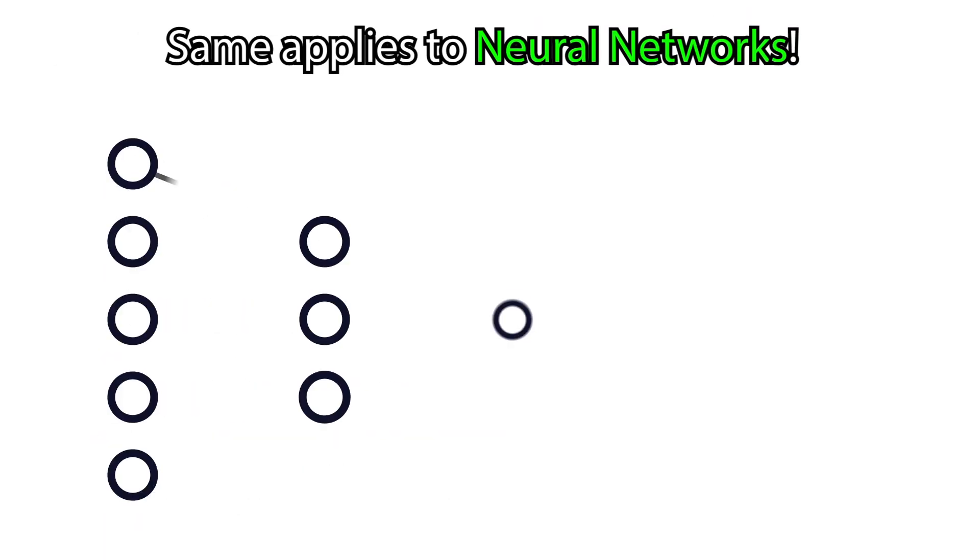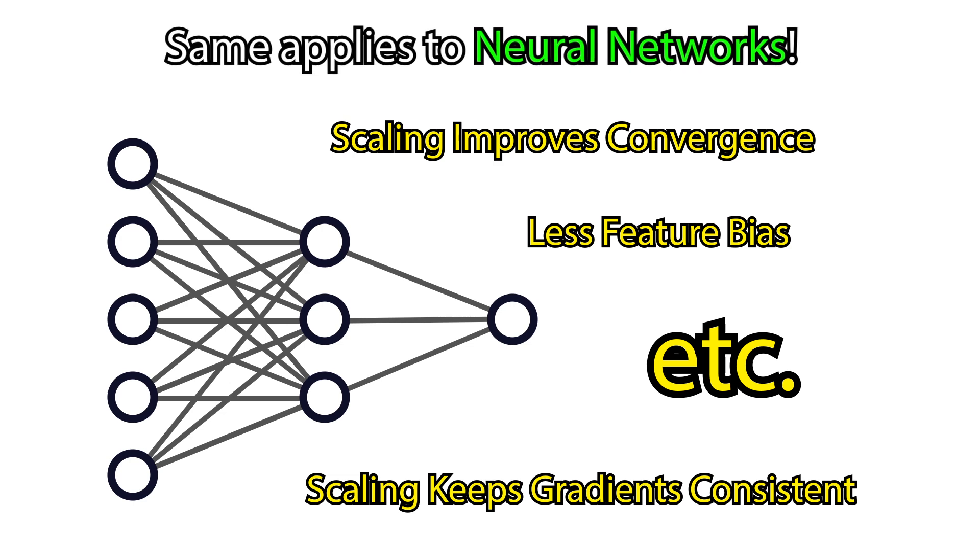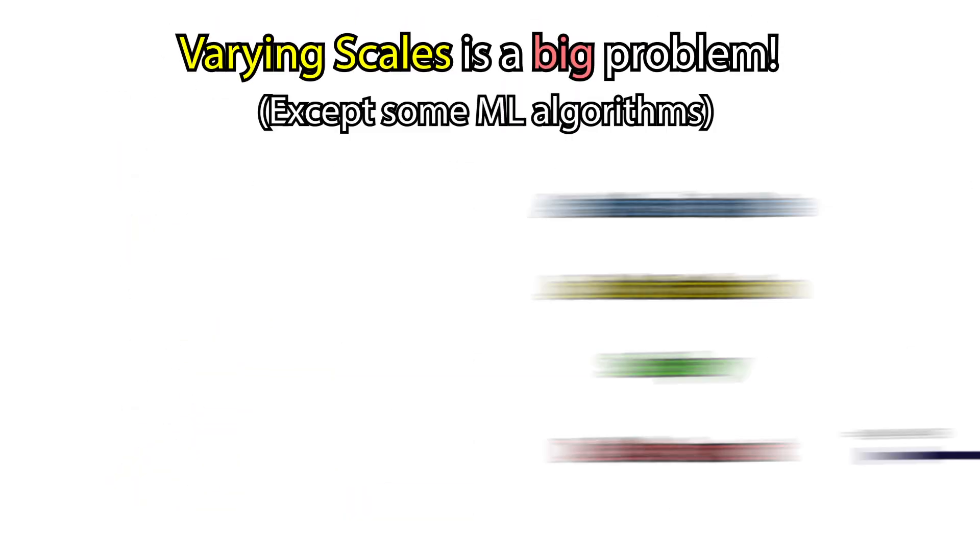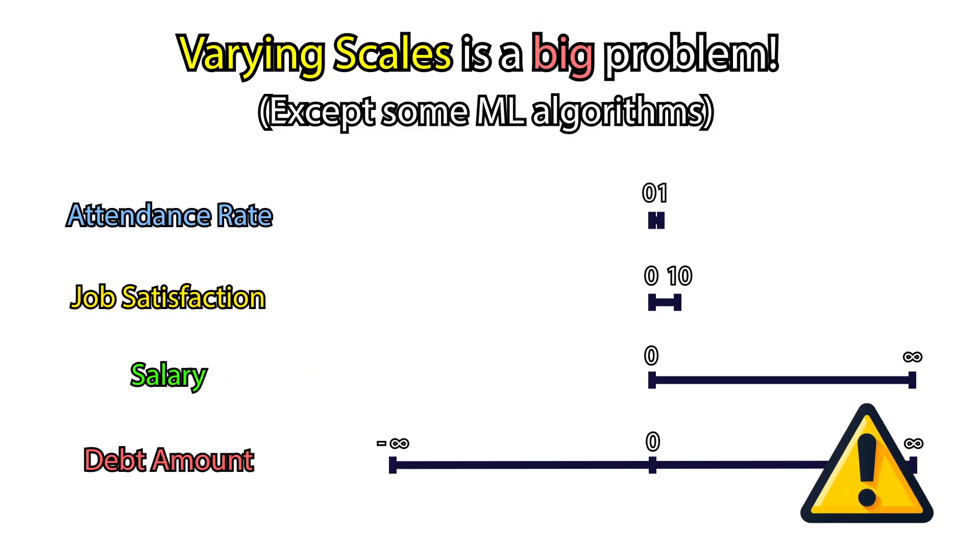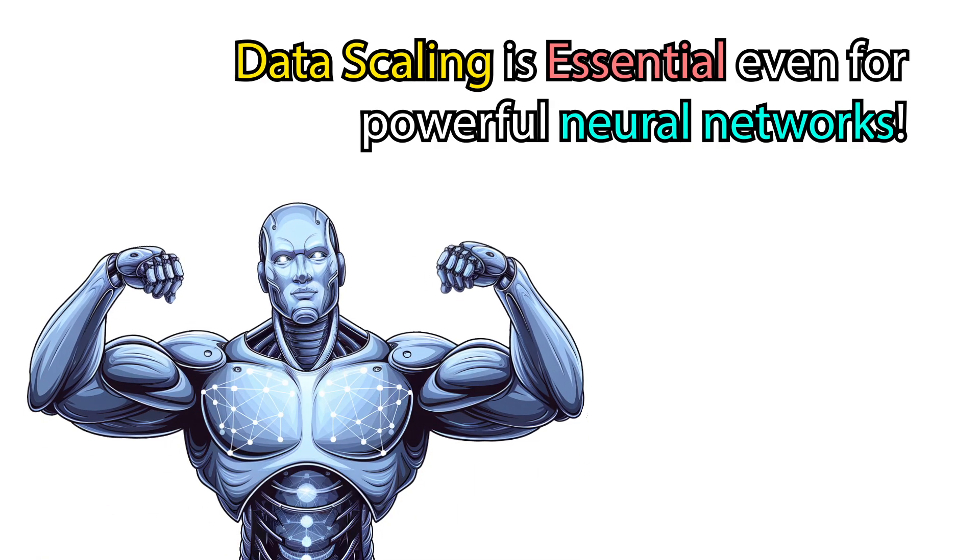The same applies to neural networks, but in a different way. Varying scales can seriously affect the training process. Thus, even for powerful neural networks, data scaling is essential.